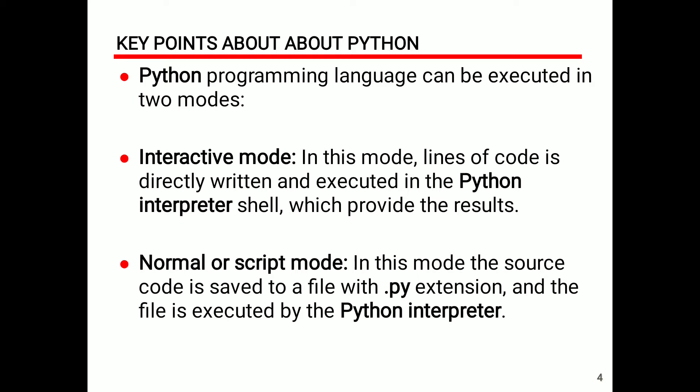We already know about the extensions of different technologies. For example, for C programming the extension is .c, for C++ the extension is .cpp, and similarly the extension for Python is .py.